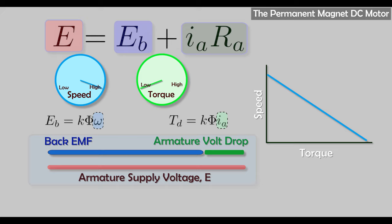A DC motor with constant flux has inherently good speed regulation over a wide range of torque. Looking at this simulation: we start at no load and then increase the torque. The armature current and volt drop increase, but the increase is small relative to the size of the back EMF. In other words, the armature current increase has a relatively small effect on the back EMF — yes, it decreases, but only by a small amount. This is a great feature of the DC motor: very nice regulation of speed over a wide range of torques.